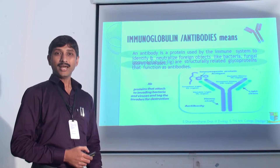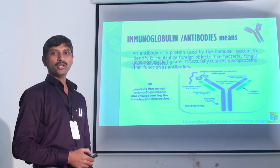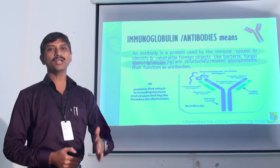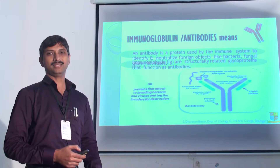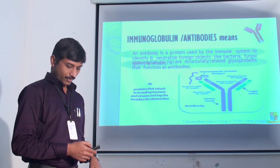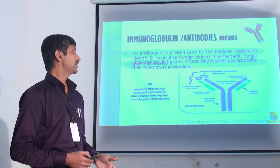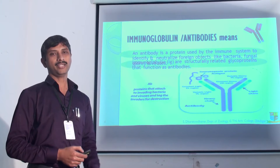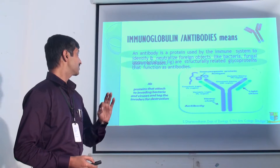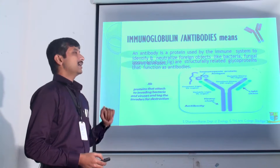B cells produce the antibody, otherwise called immunoglobulin. An antibody is a protein used by the immune system to identify and neutralize foreign objects like bacteria, virus, and fungal bodies. Immunoglobulin are structurally related glycoproteins that function as antibodies. So antibody and immunoglobulin are the same — immunoglobulin is a glycoprotein synthesized by the B cells.